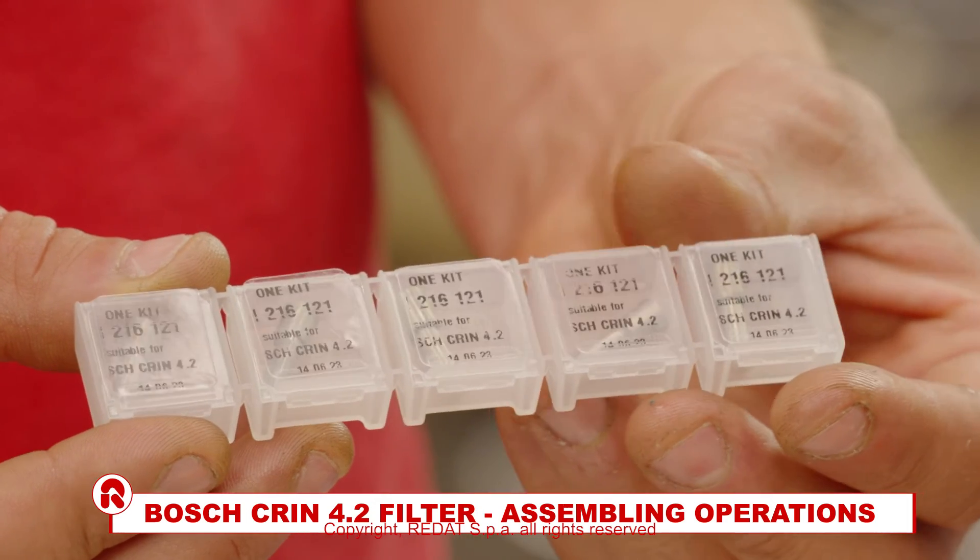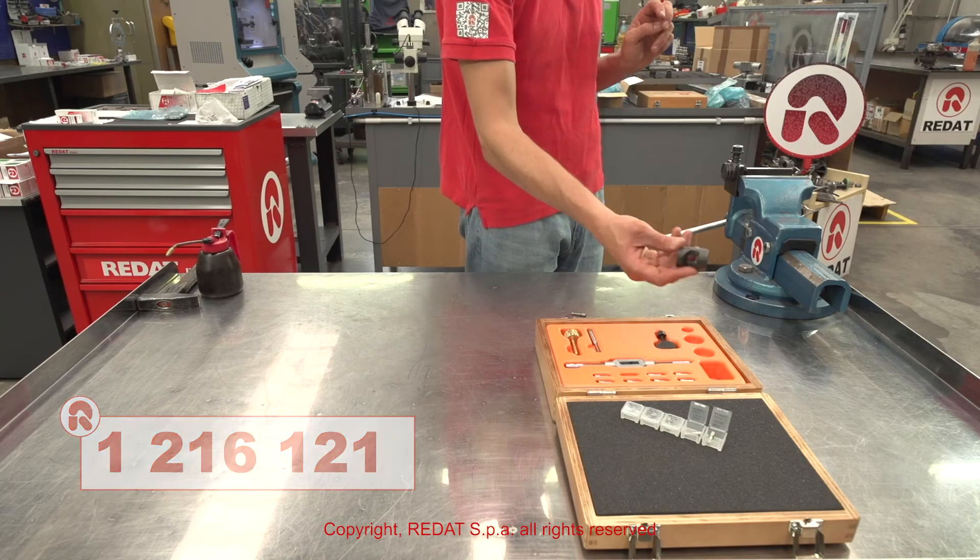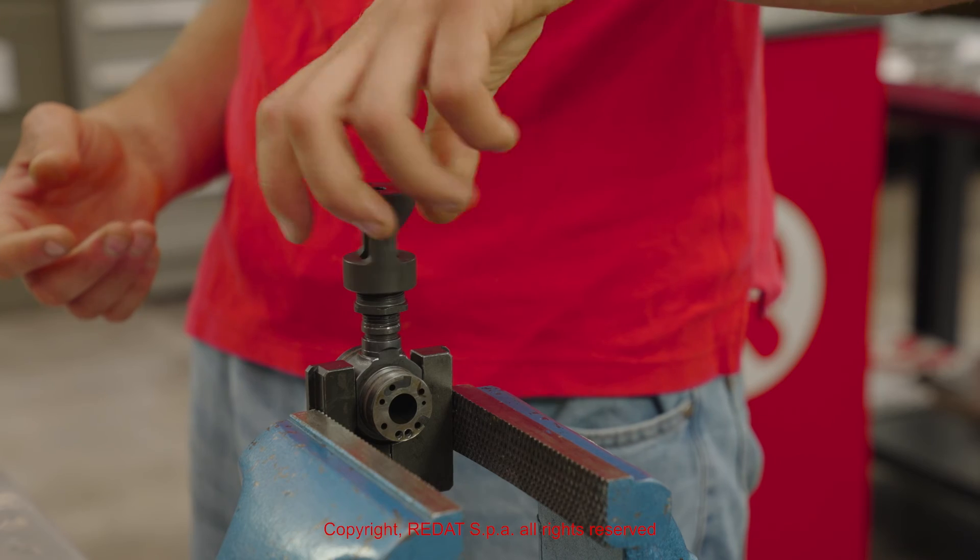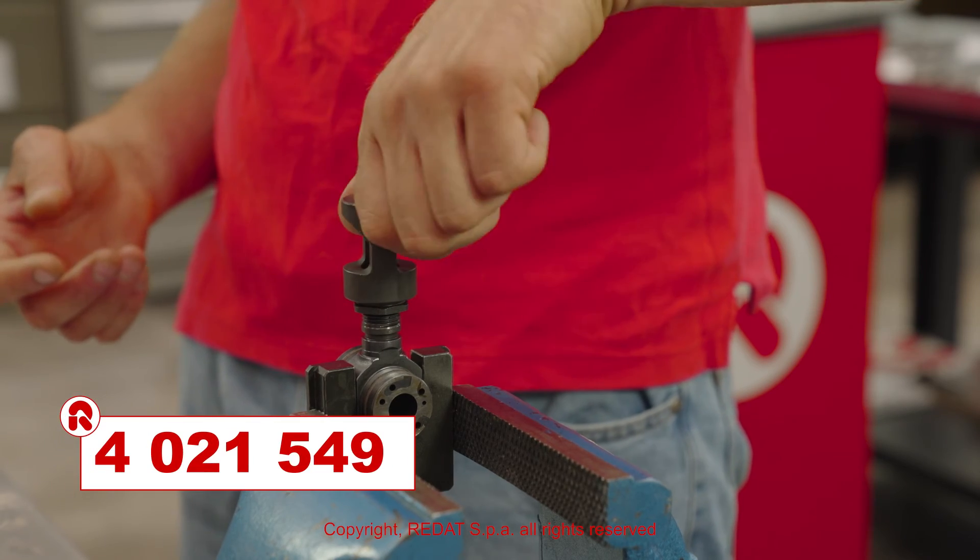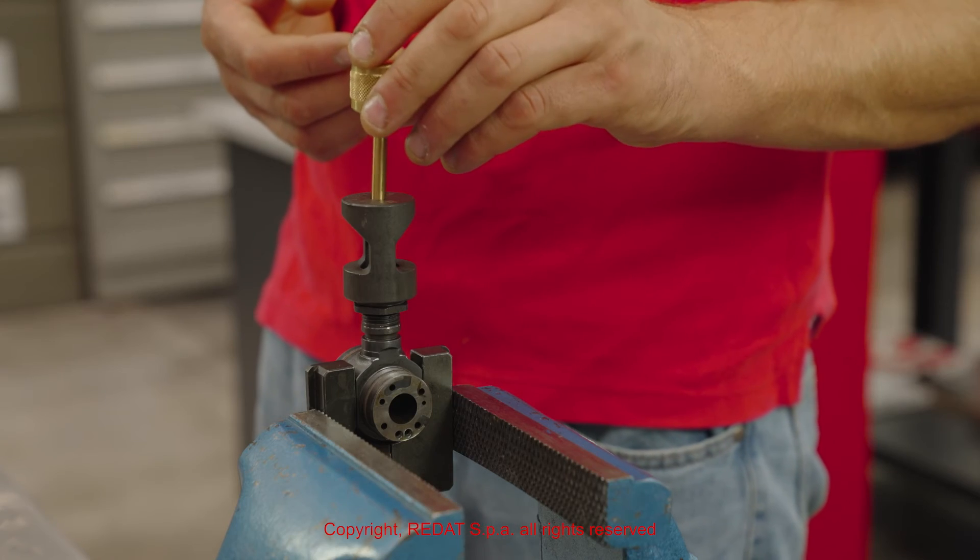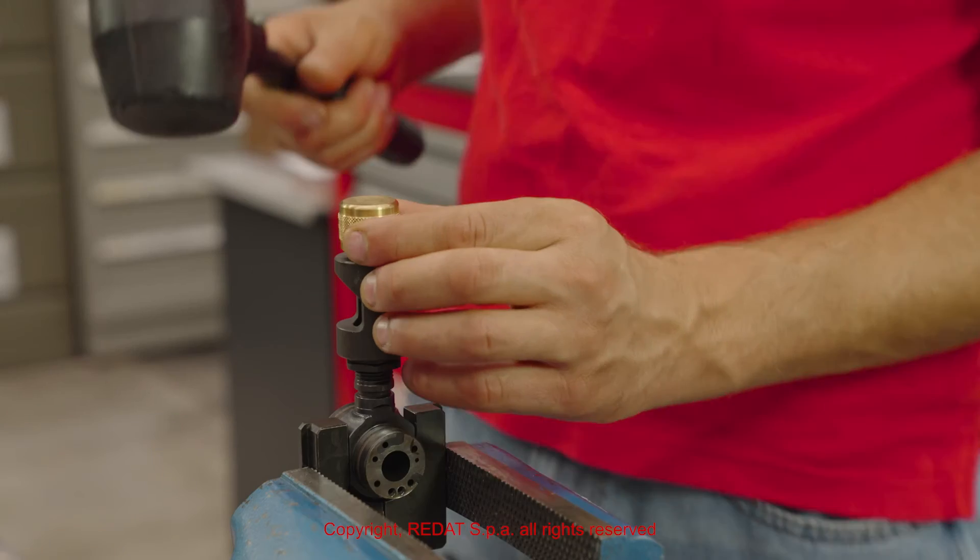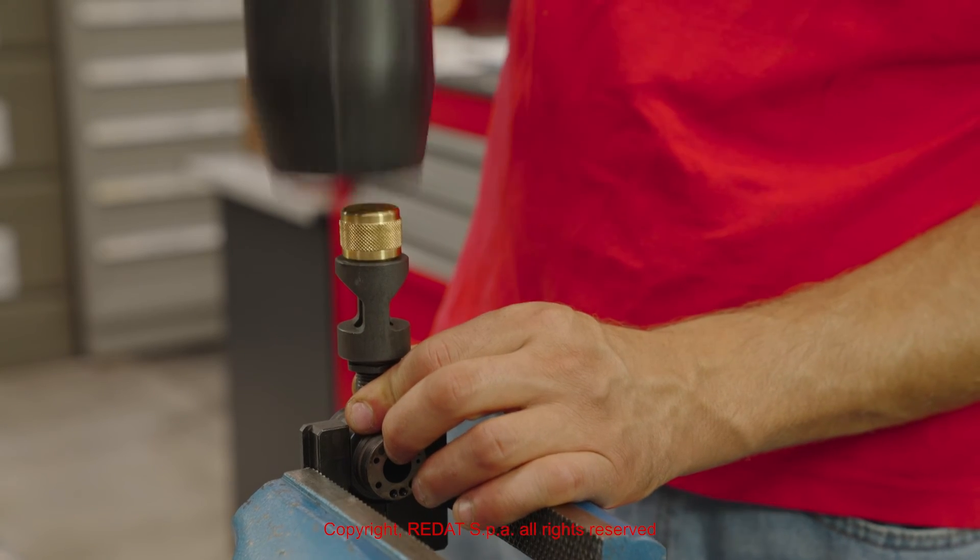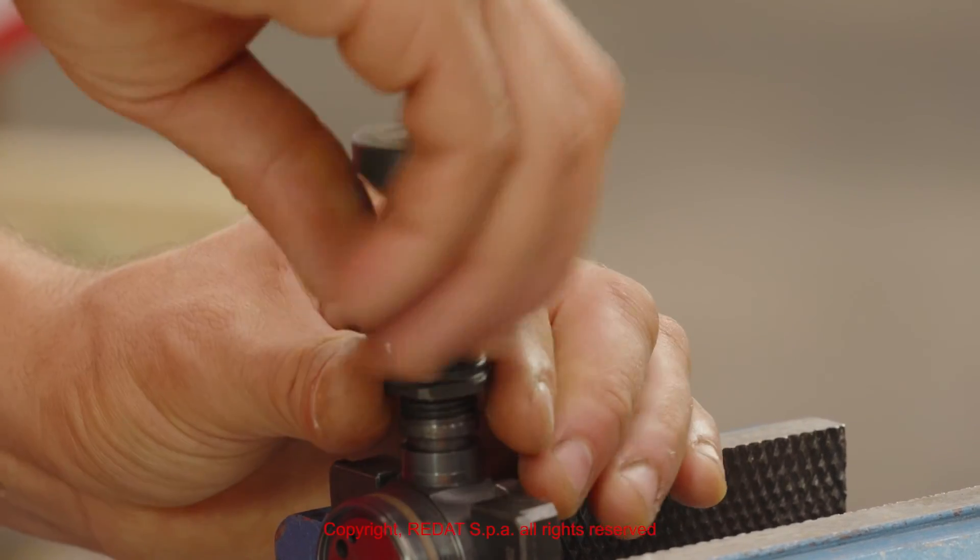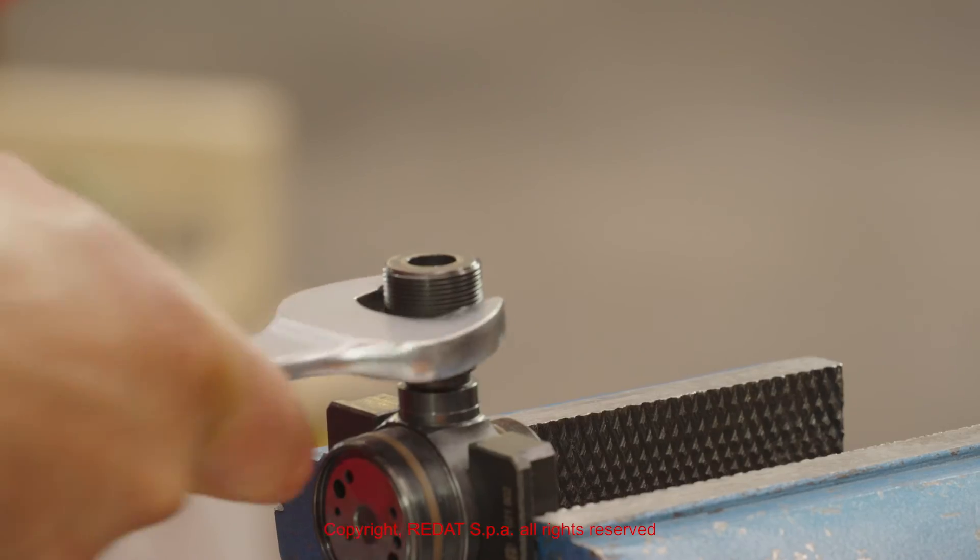We now proceed to the installation of the filter 1 2 1 6 1 2 1, inserting it in its seat. We screw the tap guiding bush 4 0 2 1 5 4 9 onto the threaded bush. We position the insertion pin 4 0 2 2 1 7 0 in the guiding bush and push it all the way down. If necessary, we can use a hammer. The insertion pin can then be removed along with the guiding bush and the threaded bush from the injector inlet.